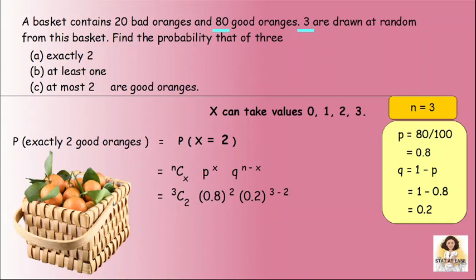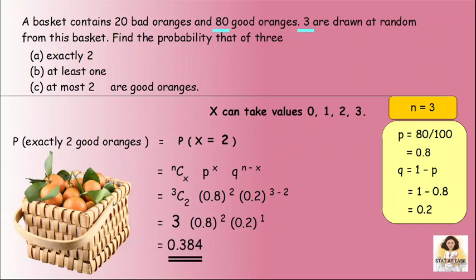P equal to 0.8, raise to 3 minus 2, which is 1. Next step: 3C2 into 0.8 raise to 2, into 0.2 raise to 1. Multiply and we get 0.384 — the answer. Exactly 2 good oranges gives the probability 0.384.